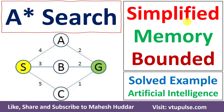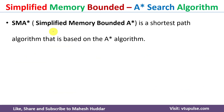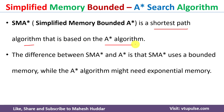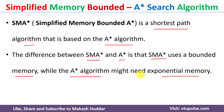In this video I will discuss the Simplified Memory Bounded A* (SMA*) search algorithm in artificial intelligence. SMA* is a shortest path algorithm based on A* search. The main difference is that SMA* uses bounded memory — there is a limit on memory usage — whereas A* might need exponential memory, which can cause it to get exhausted before reaching the goal node.